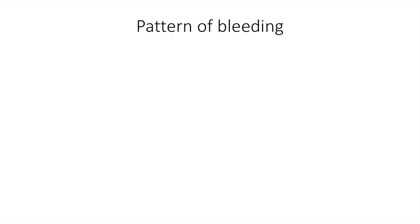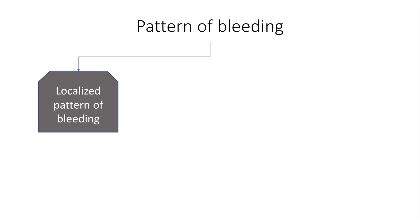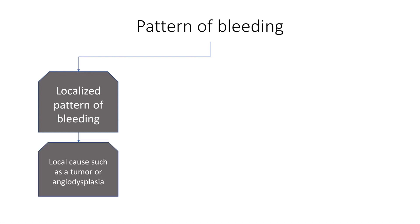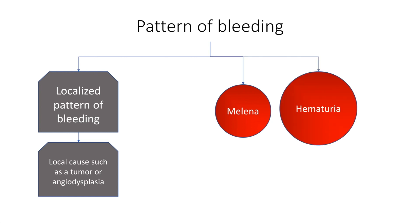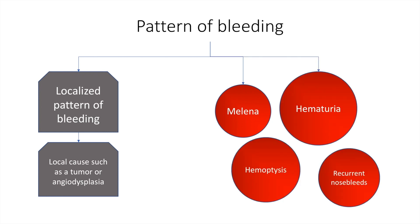Also important in history is the pattern of bleeding. If the pattern of bleeding is localized, then we must consider a local cause such as a tumor or angiodysplasia. However, if the pattern of bleeding is generalized — the patient is having melena, hematuria, hemoptysis, and recurrent nosebleeds — we can think of an underlying bleeding disorder.